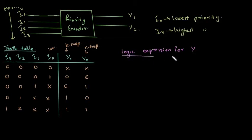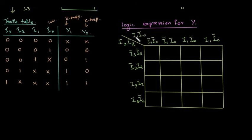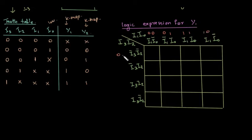For the K-map we mark i1, i0 on one axis and i3, i2 on the other axis. i1-bar i0-bar corresponds to 0,0; then 0,1; 1,1; and 1,0. Similarly for the other axis: 0,0; 0,1; 1,1; 1,0.